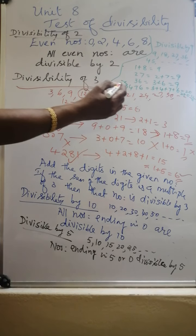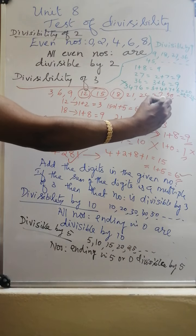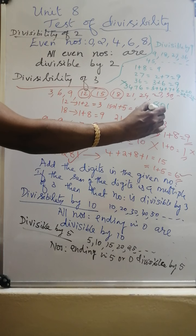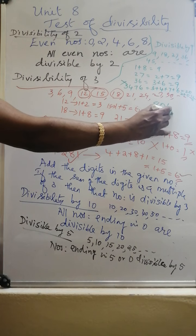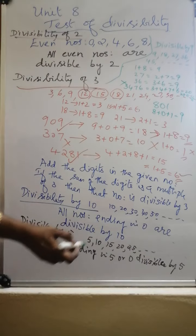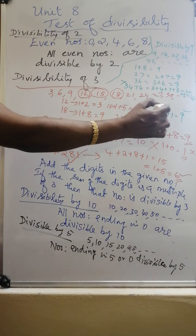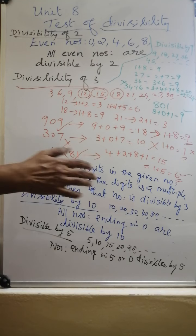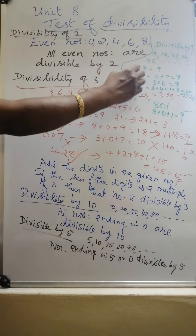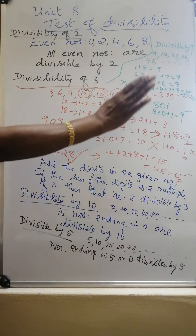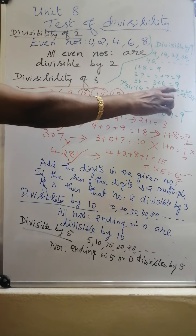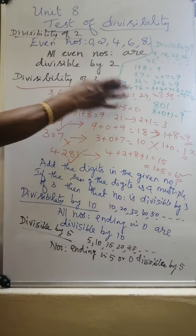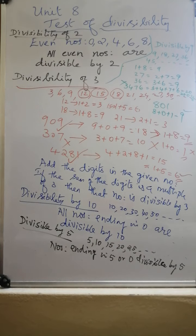One more example: 801. 8 plus 0 plus 1 is 9. So this number is divisible by 9. That is, if the sum gives you 9, then that number is divisible by 9.